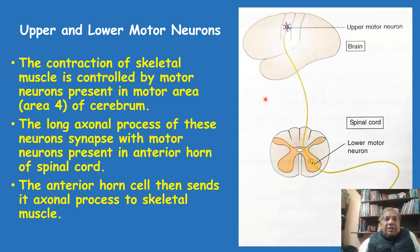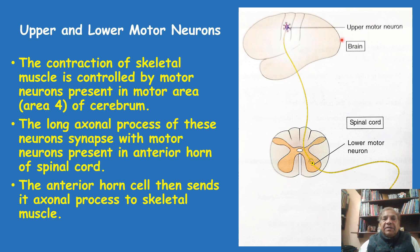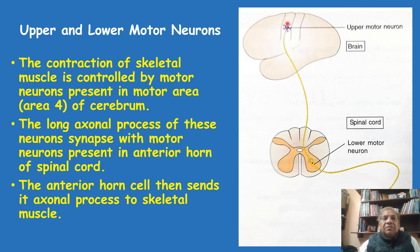In this diagram, you are seeing the cerebrum — that is the brain — which is in the cranial cavity. We are seeing it from the side. This area, where the neuron is shown and labeled as upper motor neuron, is the area called the motor area, where there are millions of motor neurons in what is called the precentral gyrus or the motor cortex.